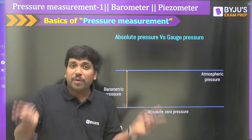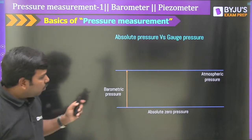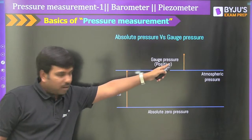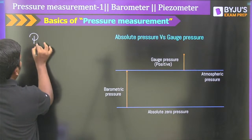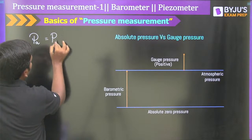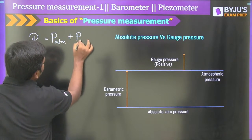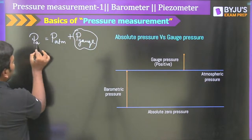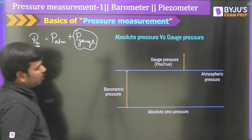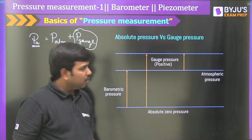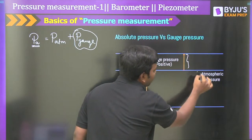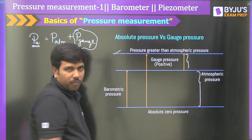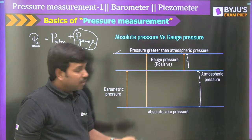The absolute pressure equals atmospheric pressure plus gauge pressure. If gauge pressure is positive, absolute pressure is more than atmospheric. This is visible in the chart as the net value. Gauge pressure added to atmospheric pressure gives total absolute pressure. If gauge pressure is negative, atmospheric pressure minus that value gives absolute pressure less than atmospheric.